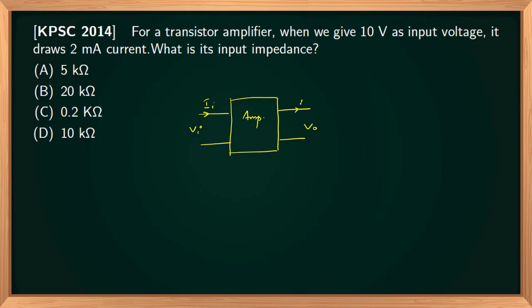Zi is the ratio of vi and ii. It is given that vi equals 10 volts and draws a current of 2 milliampere. Therefore, Zi equals 10 divided by 2 milliampere. This is in volts, so we will get 10 by 2, that is equal to 5 when milli goes to numerator it becomes kilo, so 10 to the 3 ohms. That is 5 kilo ohms. The correct option is Option A, 5 kilo ohm.